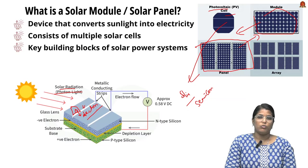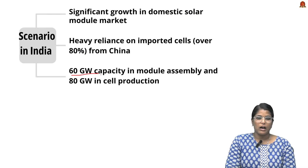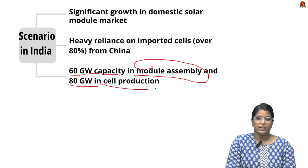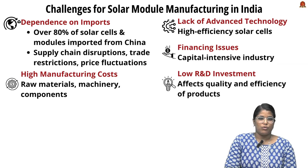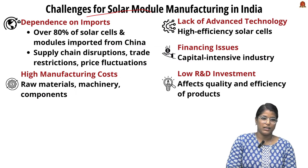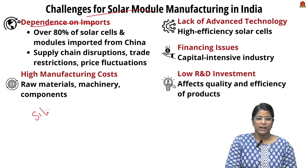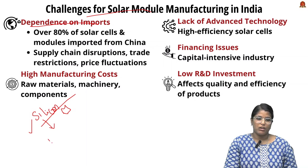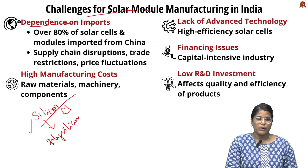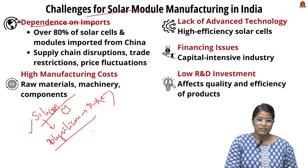Regarding India's status in solar module production: India has only 60 gigawatt capacity in module assembly and 80 gigawatt in cell production. The remaining demand is addressed by importing cells from China. The key challenge is our dependence on China. Although silica is a major component of photovoltaic cells, silica must be converted into polysilicon — a capital-intensive process — and China has already made all the initial investments required for this.